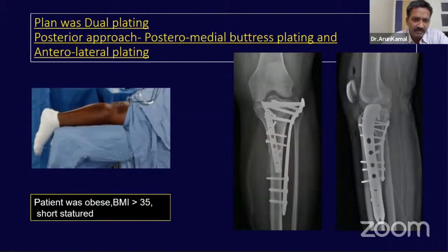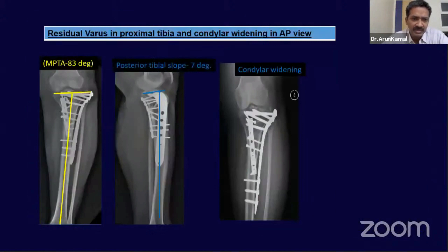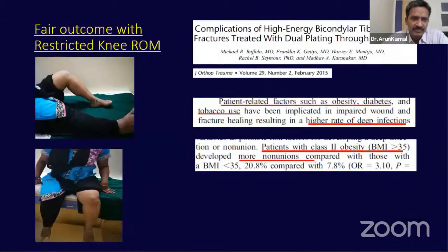This patient was obese and short-statured with a BMI greater than 35. During healing, the fracture slowly went into slight varus and healed in a varus position, with some condylar widening. This patient had a fair outcome — not very good, but knee movements were reasonably acceptable.